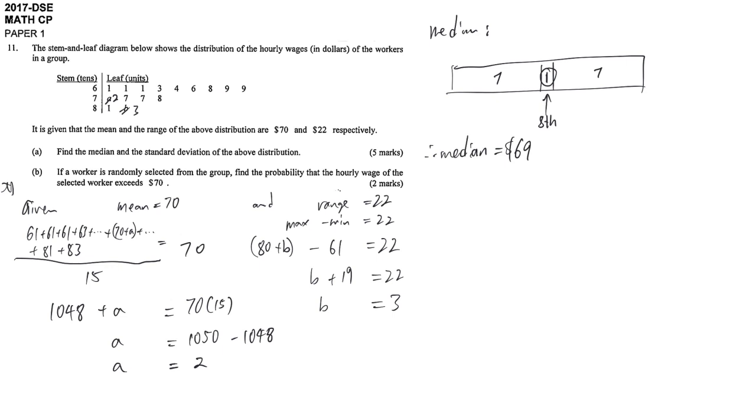And then to get the SD, then you just simply use your calculator. Input all the values, and then you get SD by Shift 2. So SD is equal to, after we use the calculator, the value is 7.33, correct to 3 significant figures.